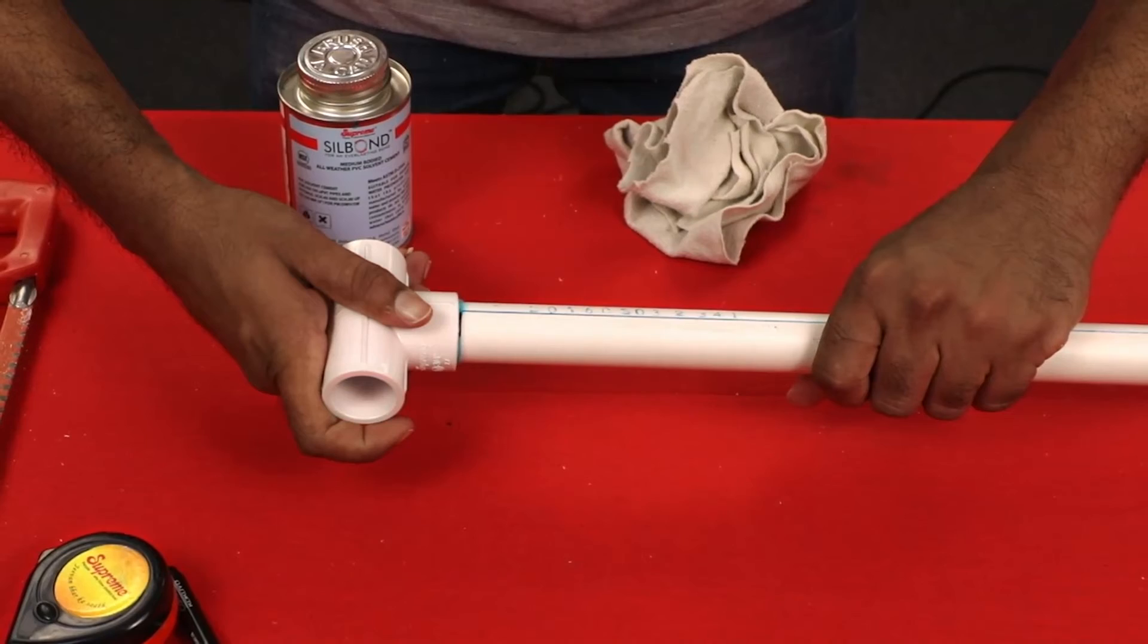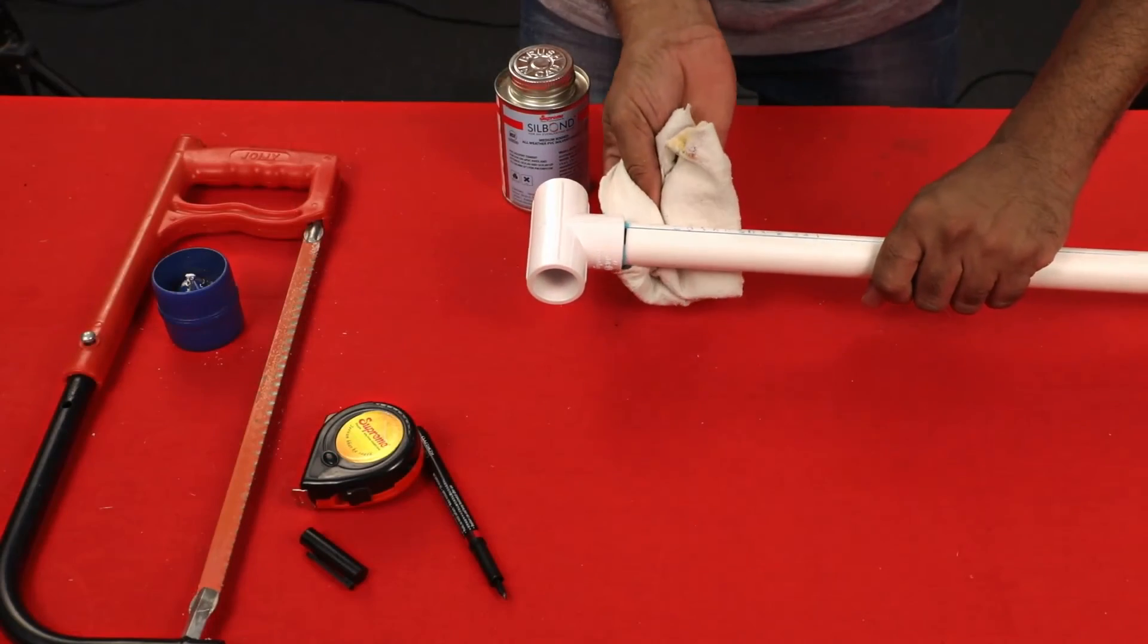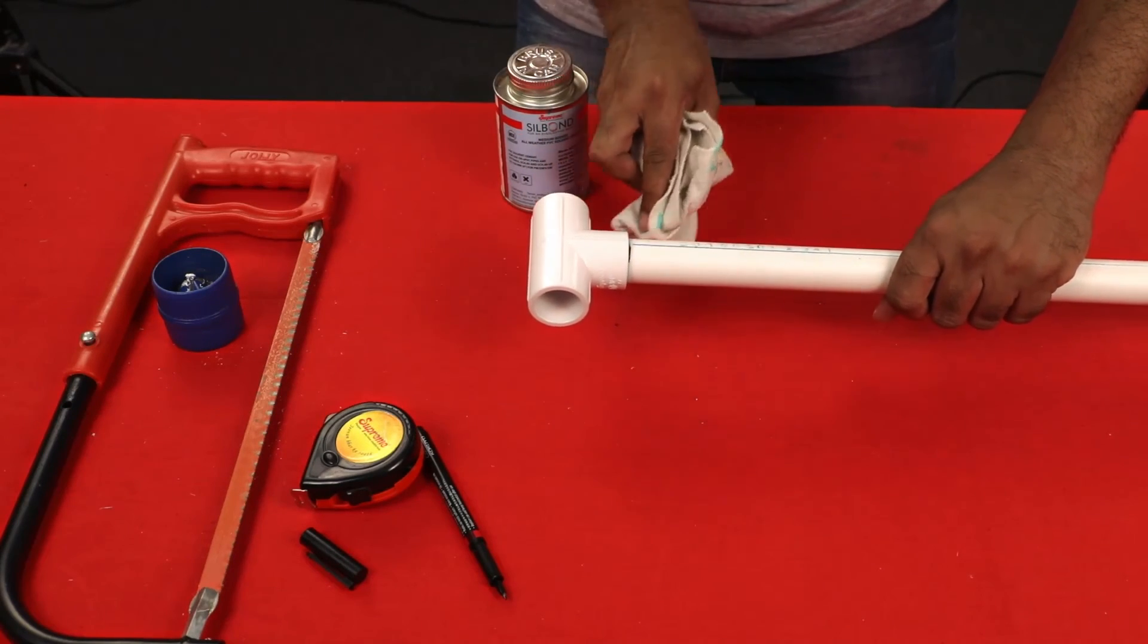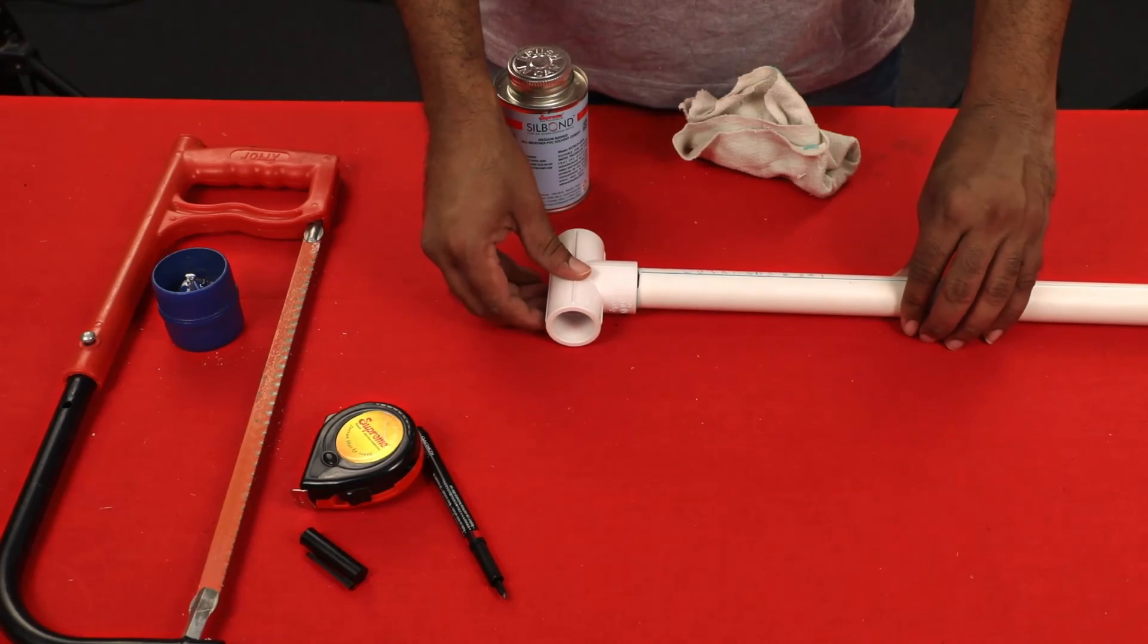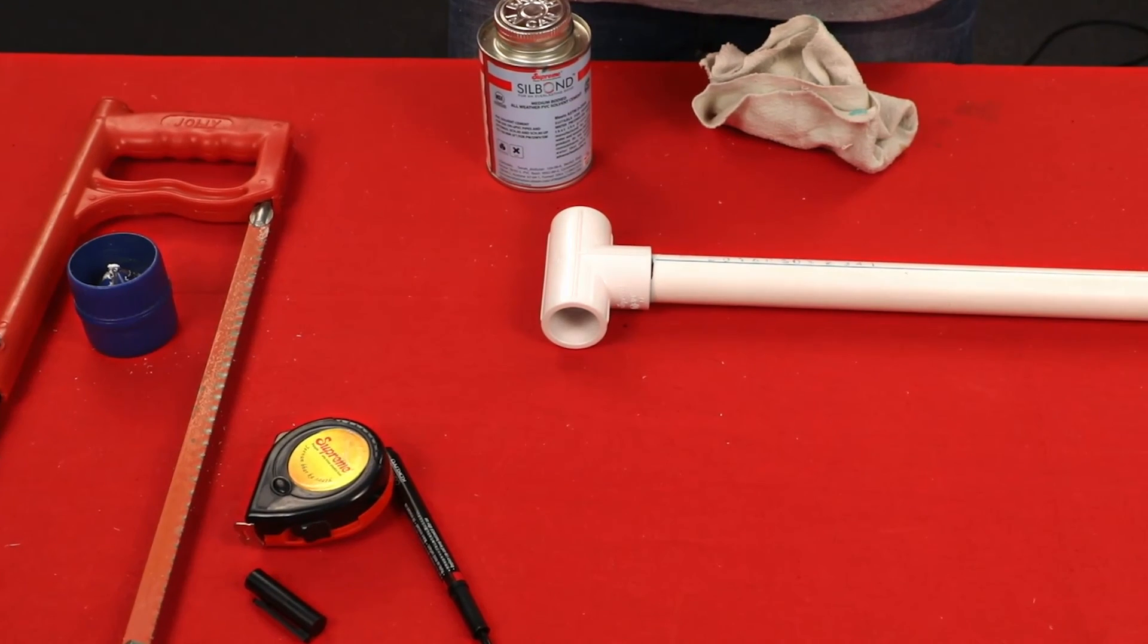Do not turn or twist the pipe or fitting once it is bottomed. Remove the excess cement from the pipe at the end of the fitting socket. The joint should not be disturbed or pressurized immediately after cementing to ensure proper curing, which normally takes about 12 hours.